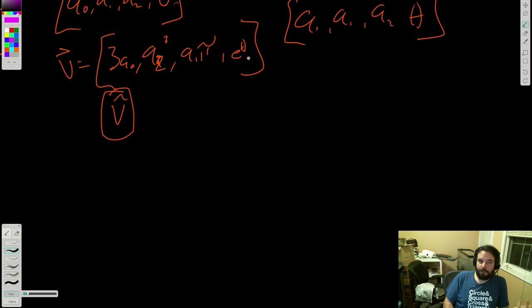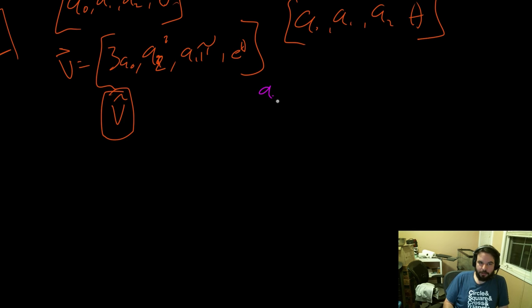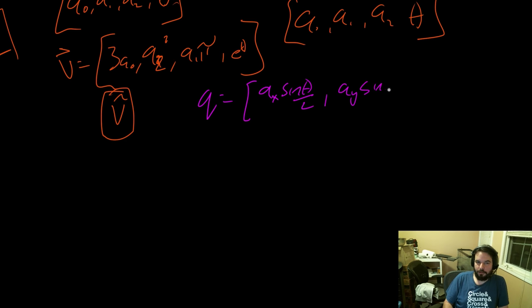The formula for a quaternion, written with x notation, is: ax * sin(θ/2), ay * sin(θ/2), az * sin(θ/2), and cos(θ/2).